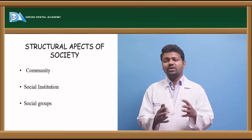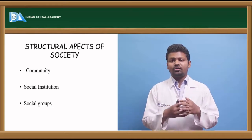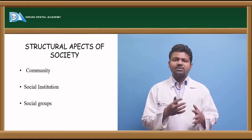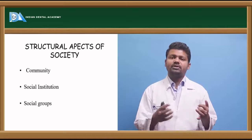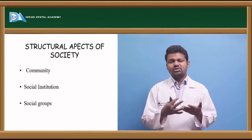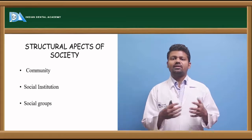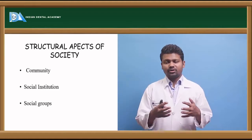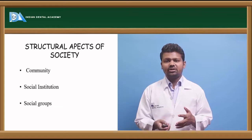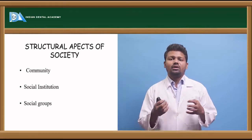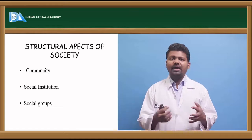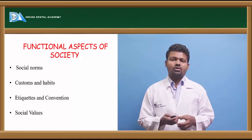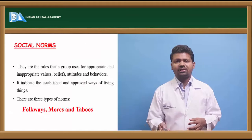Society meetings allow people to come together. There are also social institutions where we meet many people and can encourage health values — these include hospitals, schools, and various study institutions. Social groups are associations which people form so that people from different places can come together, for example the Indian Dental Association.